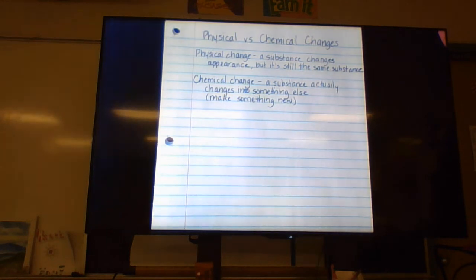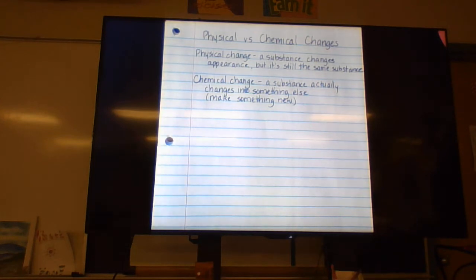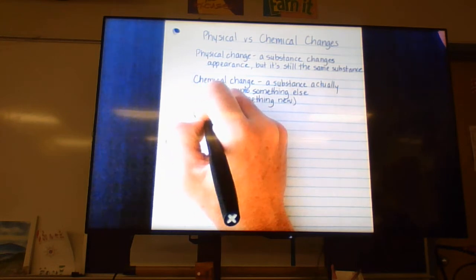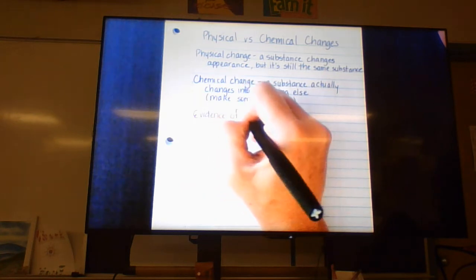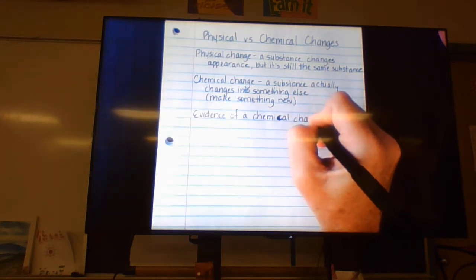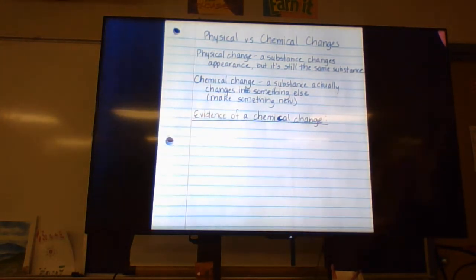Now, in order to tell whether we have a chemical change, there are things called evidences of chemical change. If you see an evidence of chemical change, you know it's a chemical change — like setting fire to paper creates heat, smoke, and ash, so something new was made. You need to memorize these evidences; they are really important.